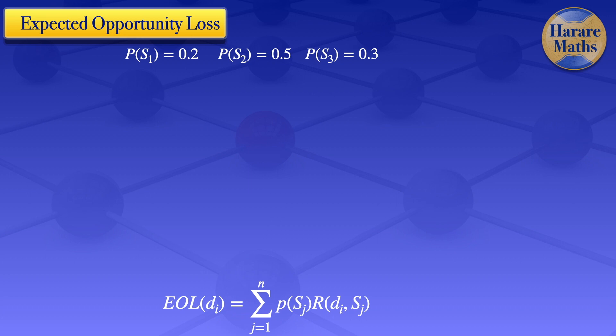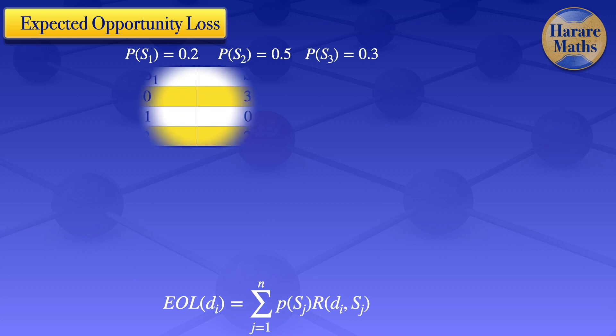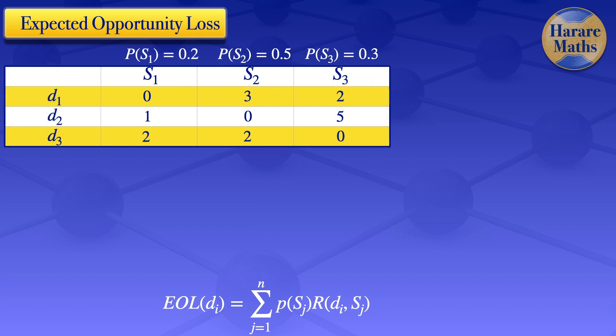To calculate the expected opportunity loss we need the regret table. We had found the regret table in a previous question using the minimax regret criteria. The regret table obtained was: for decision 1: 0, 3, 2; decision 2: 1, 0, 5; and for decision 3: 2, 2, 0. So we can just use that one since we had previously calculated it.